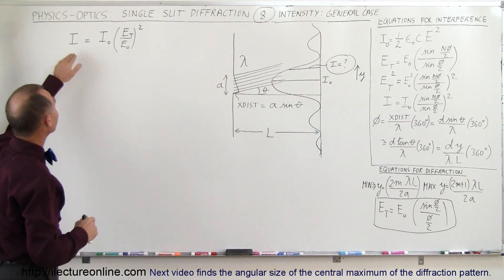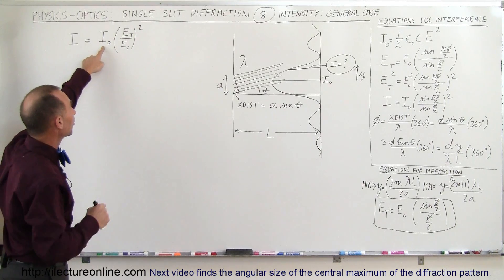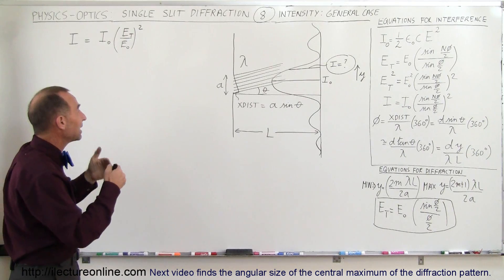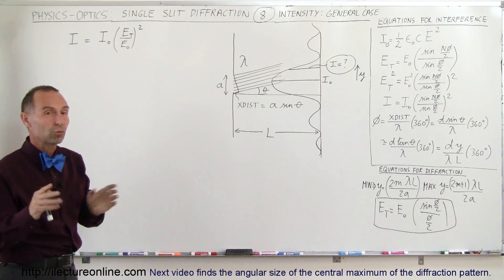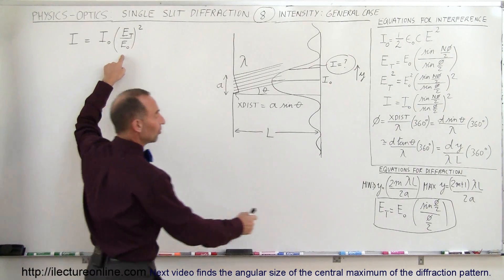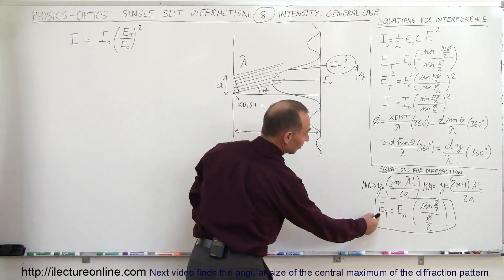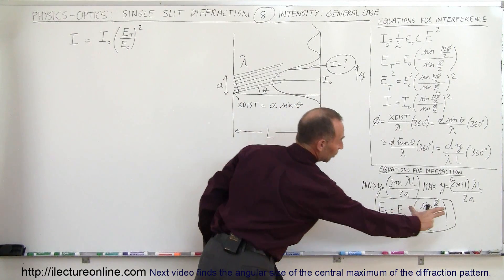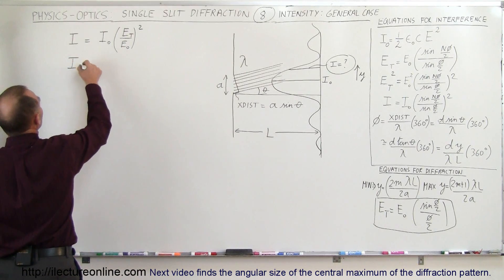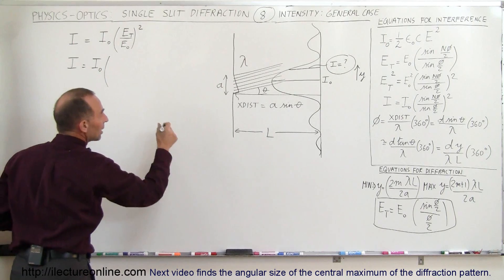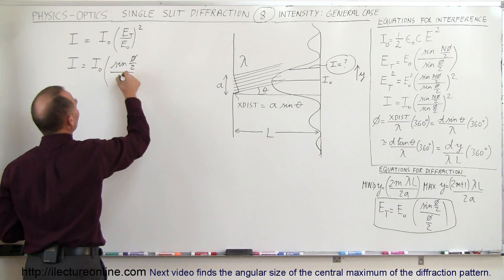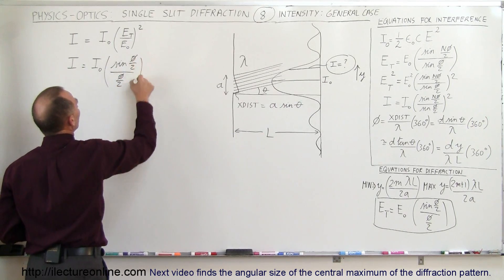Since we know that the intensity is a function of the intensity at the central maximum times the ratio of the electric field oscillation squared divided by the total electric field oscillation squared when there's no phase difference, we can plug in that expression. When we take E sub total divided by E sub nought, we get what's inside the parentheses. Therefore, the intensity anywhere can be written as I sub nought times the quantity of sine of the phase angle divided by 2, divided by the phase angle divided by 2, quantity squared.